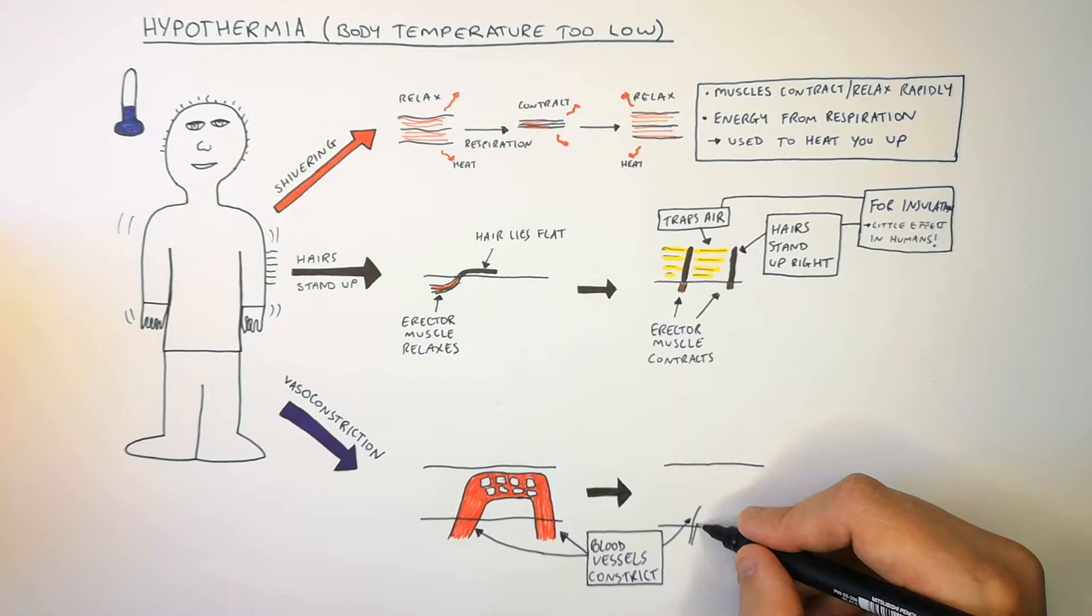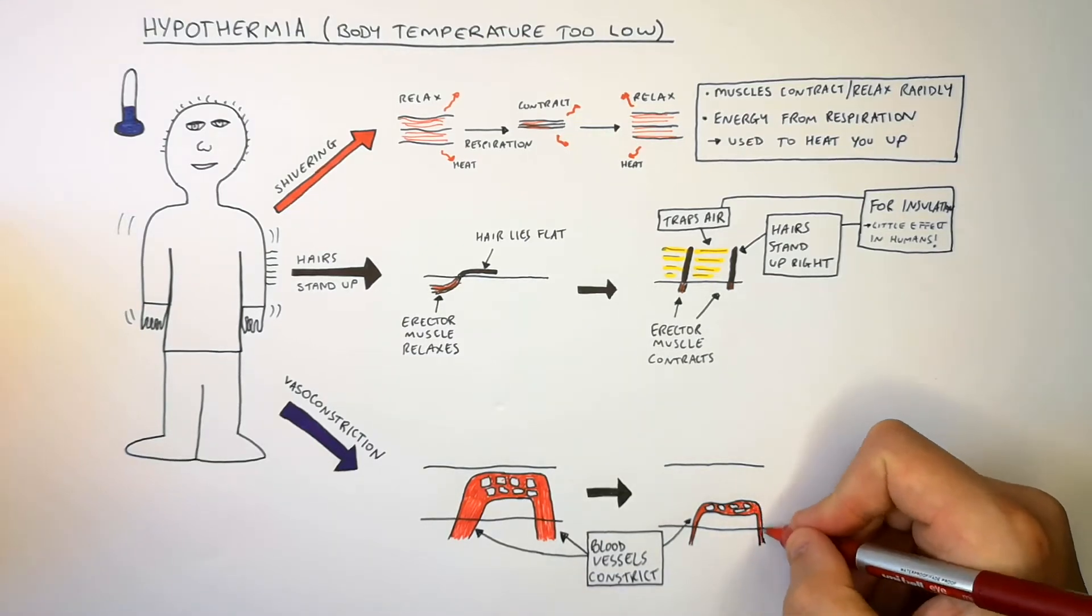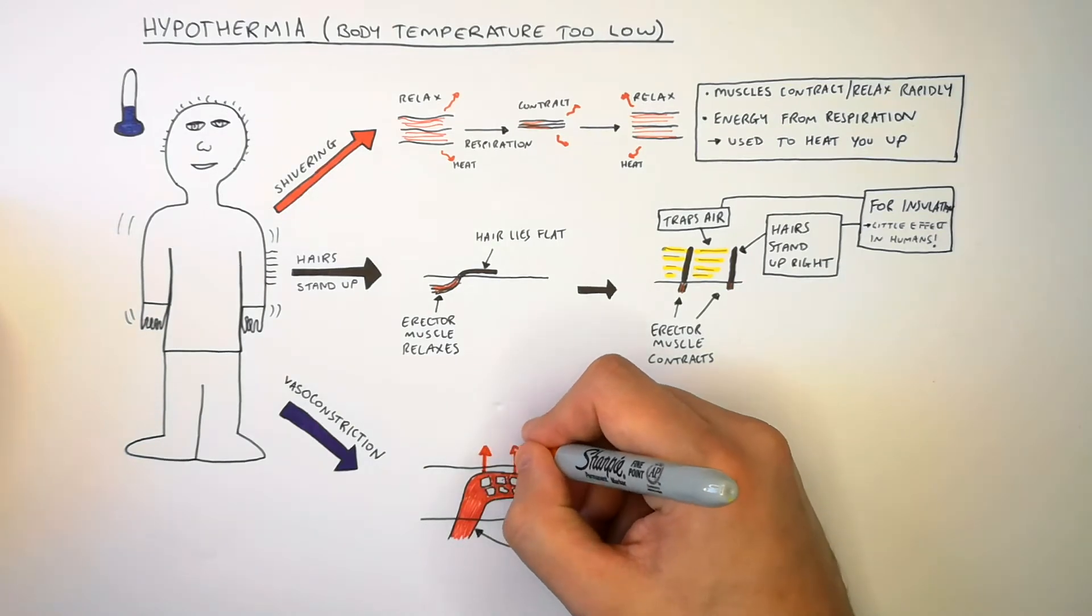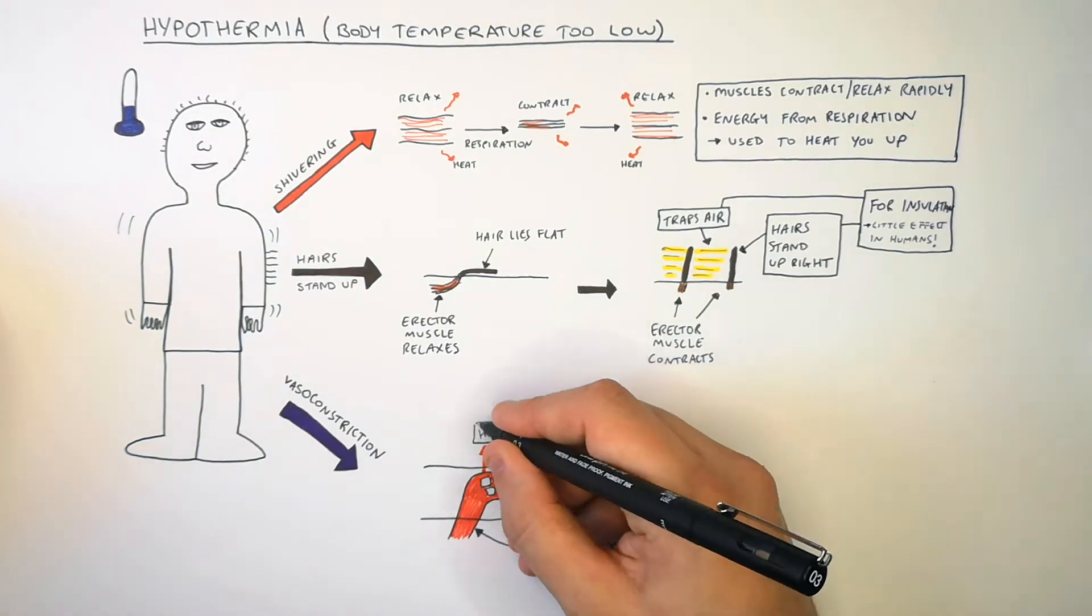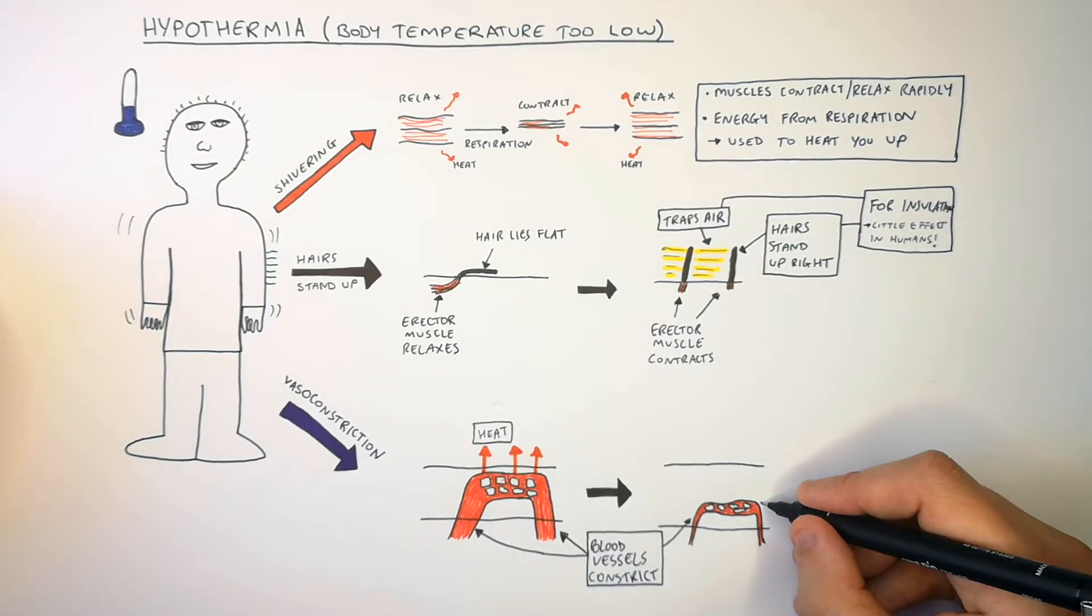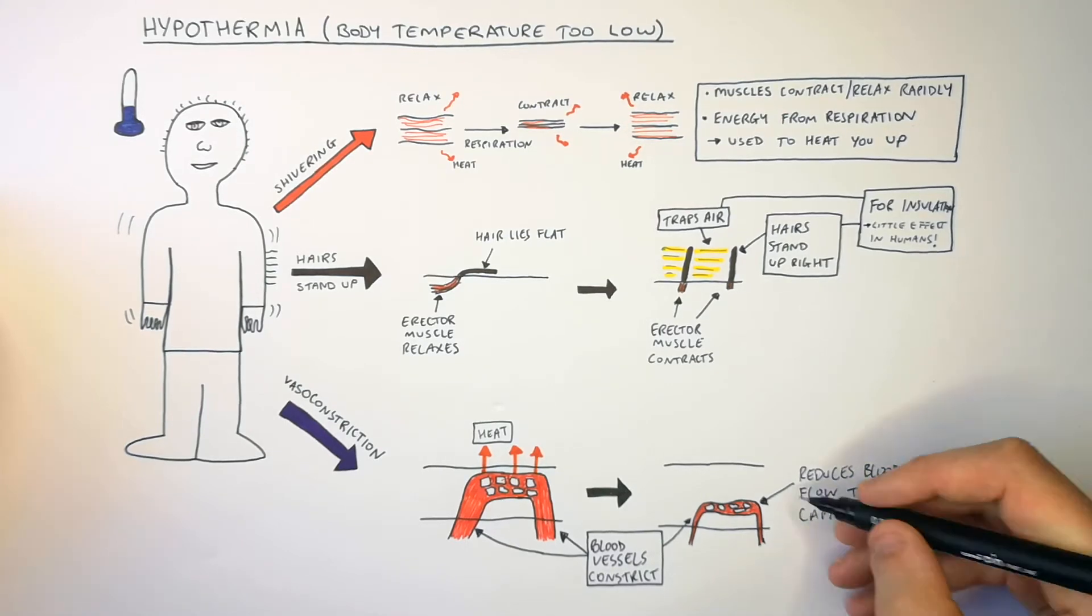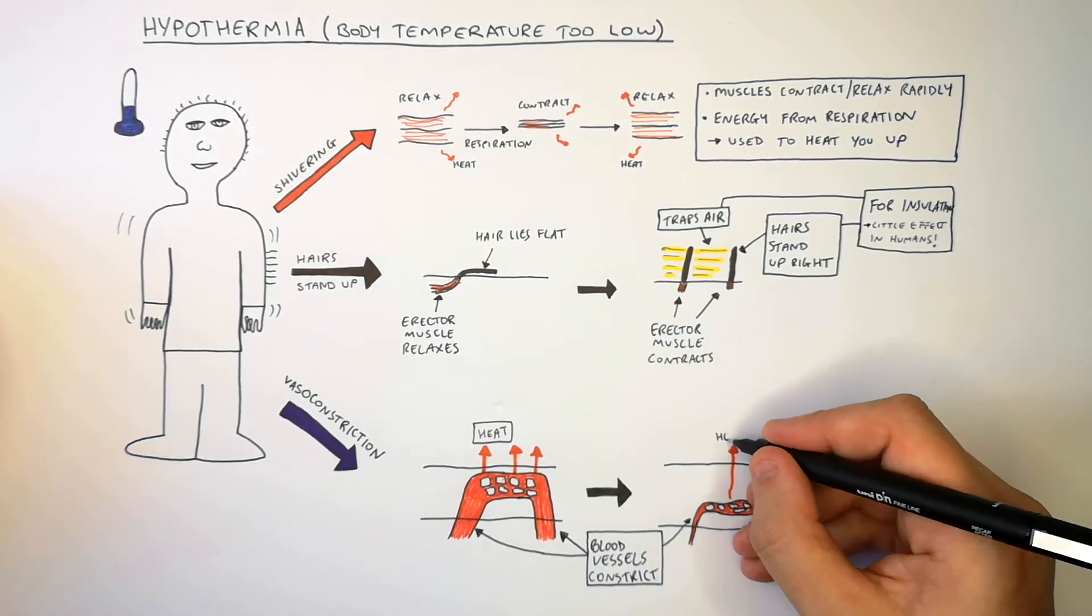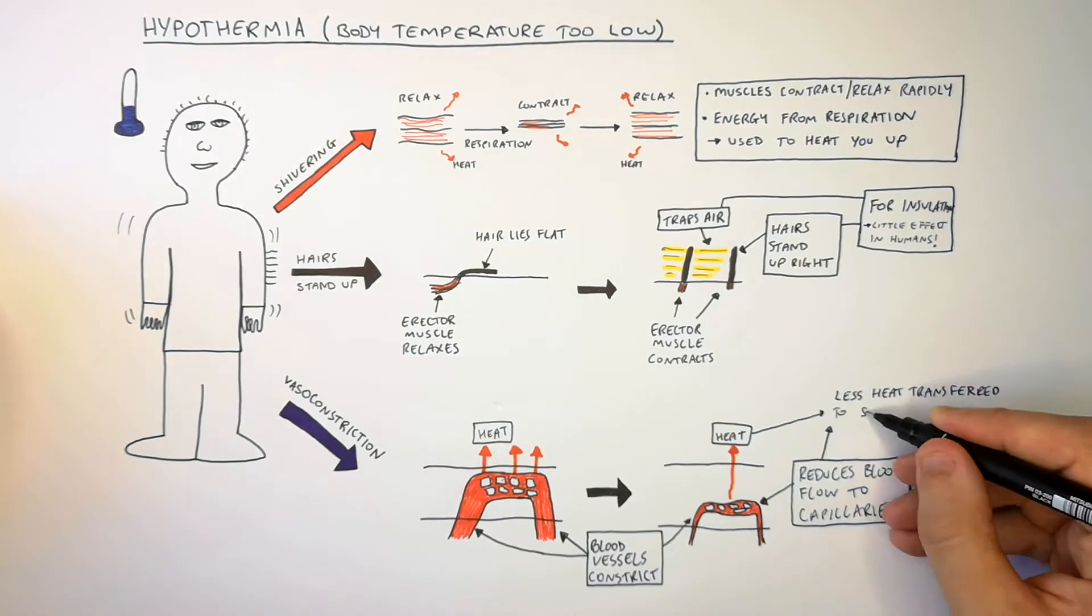So if the blood vessels constrict that means that less blood can get to the surface of our skin and it isn't as close to our skin either. Because if the blood vessels are close to our skin that means more heat can be transferred to the surroundings which increases heat loss. However during vasoconstriction there is a reduced blood flow to the capillaries directly under the skin. This leads to less heat being lost to the surroundings from our blood.